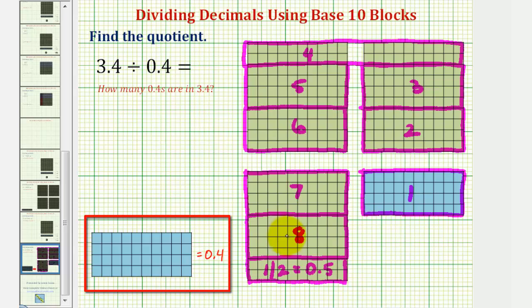Which means our quotient is 8.5. Which means there are 8.5 or eight and a half copies of 0.4 in 3.4.